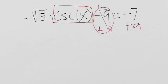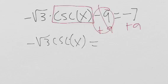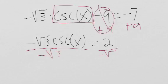So now we have negative root three cosecant x equals positive two. Now we can divide by negative root three on both sides. These cancel and we're just left with cosecant x.